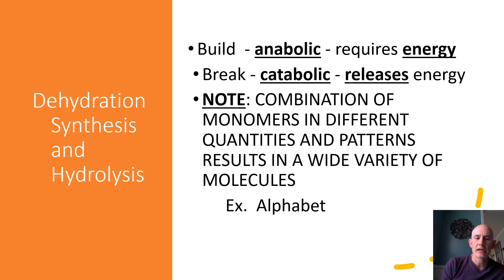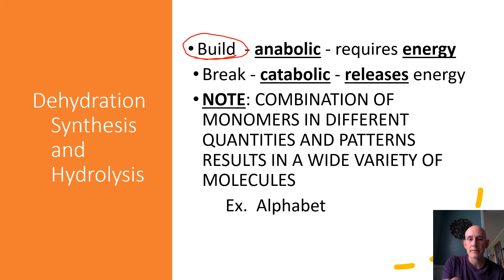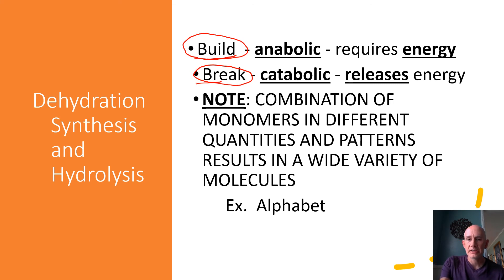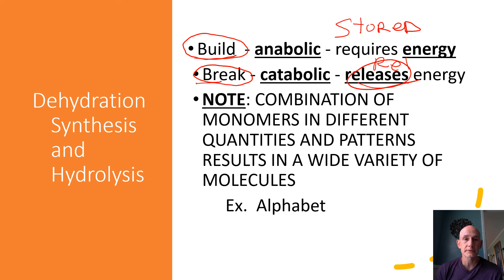These two types of reactions — hydrolysis and dehydration synthesis — can be classified as two basic types of metabolism: anabolic and catabolic. Anabolic metabolism is where cells are building something, like anabolic steroids taken by bodybuilders to build muscle. Catabolic metabolism is where things are broken down. Both require energy to start, but anabolic reactions store energy while catabolic reactions release it. Examples of anabolic reactions include protein synthesis and photosynthesis — notice 'synthesis' in both names — while catabolic includes digestion of large food molecules like starch and proteins.